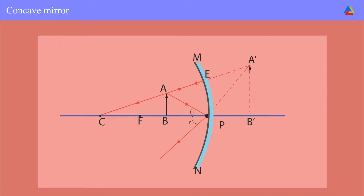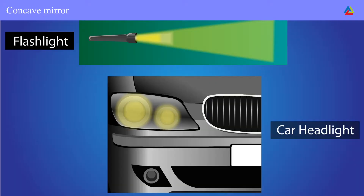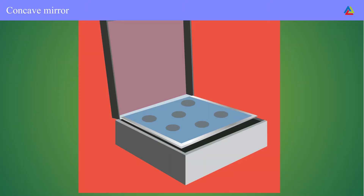When the object is placed between P and F, an enlarged, virtual, and erect image forms behind the mirror. Concave mirrors are used in torches, searchlights, and vehicle headlights to get a powerful parallel beam of light. They are also used to see large images, and large concave mirrors are used to concentrate sunlight to produce heat in solar furnaces.